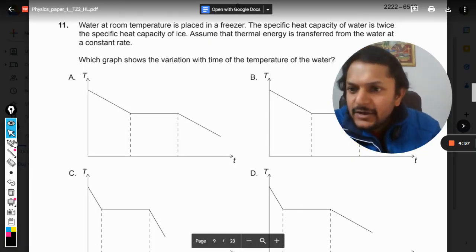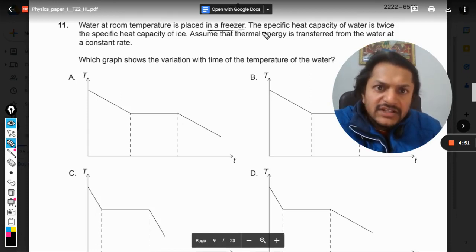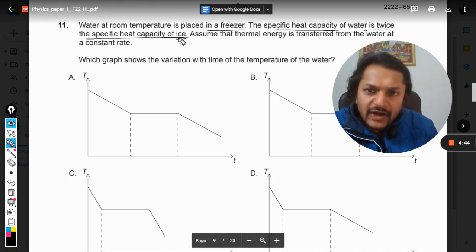Okay dear students, let us see what is there in this question. Water at room temperature is placed in a freezer. The specific heat capacity of water is twice the specific heat of ice.